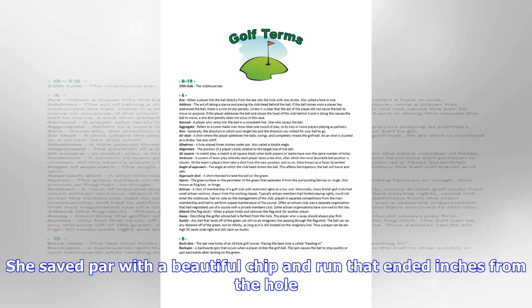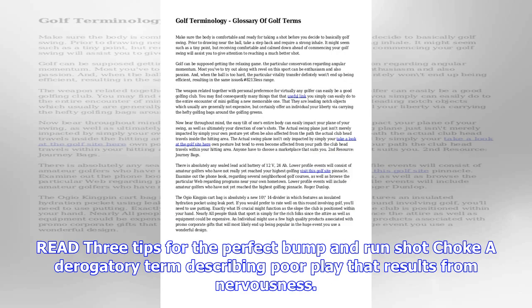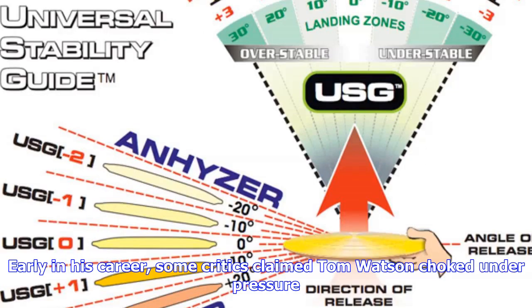Cavity back: a type of iron in which a portion of the back of the club head is hollowed out, with weight distributed around the outside edges of the club head. The cavity back irons were far more forgiving than his old blades.